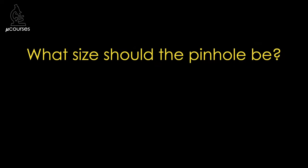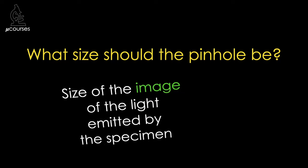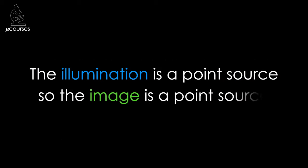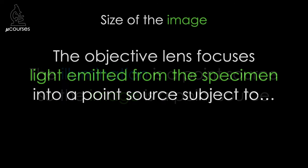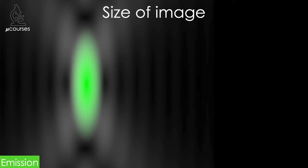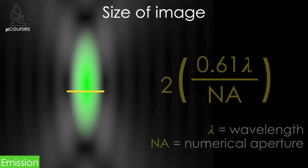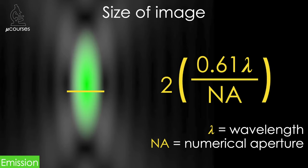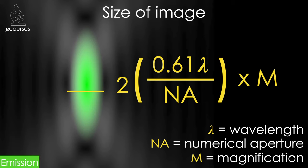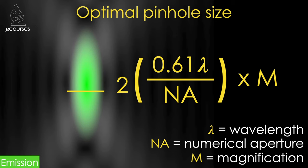If blocking out-of-focus fluorescence is the priority, the pinhole should be adjusted to match the size of the image that reaches it. Illumination of the sample with a point source leads to an image of a point source of fluorescence, and when we image a point source with an objective lens, the image is subject to the point spread function. We can therefore calculate the size of the image using the equation for the diameter of the point spread function, and since the image is magnified, we multiply by the magnification. This equation gives us the physical size of the pinhole needed to maximize reduction of out-of-focus fluorescence. In confocal software, this number is usually referred to as one Airy unit, or one AU.